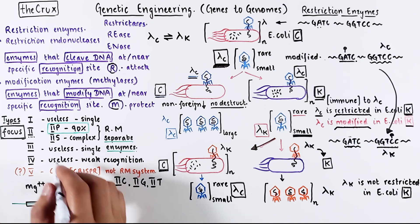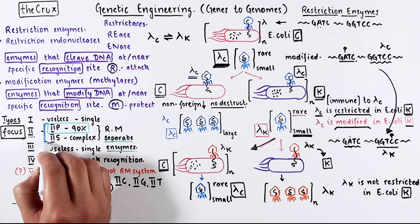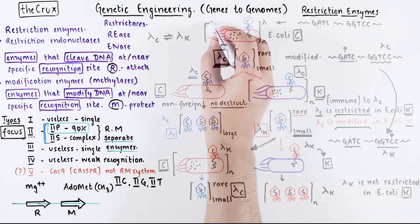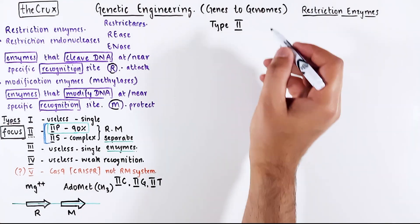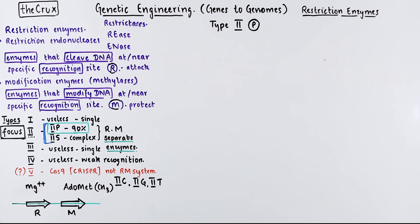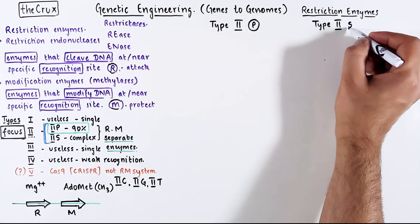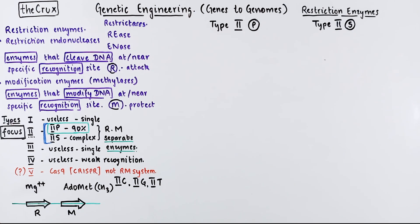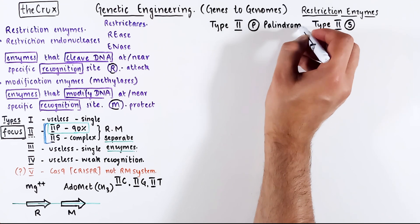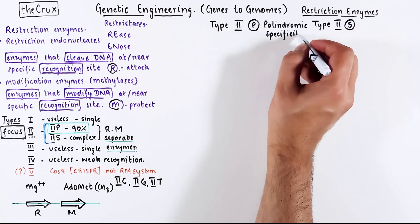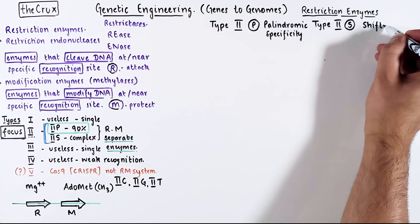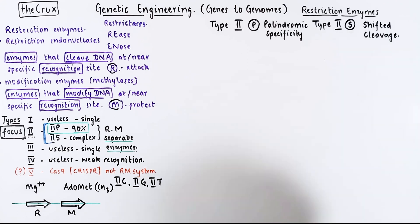Let's focus on these two important categories and understand them in a bit more detail. When you say type 2 enzymes, we default to the 2P category. So you never actually call them M2P, it is simply type 2. But for the sake of clarity, I think it is good to know. Anyways, the P stands for palindromic specificity, the S in 2S stands for shifted cleavage, and in a moment you will understand why they are named like that.